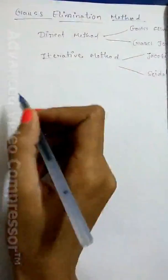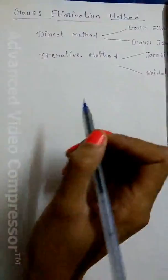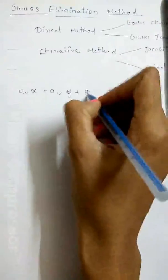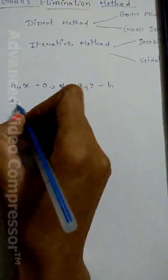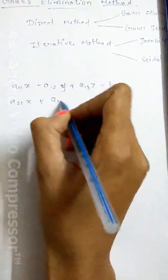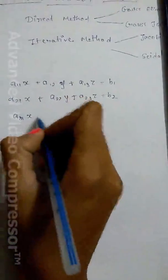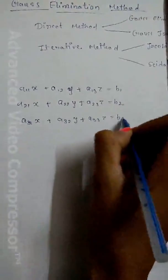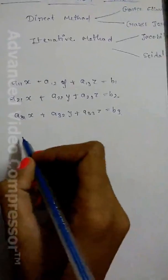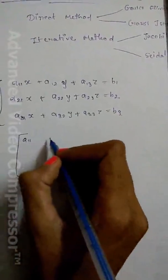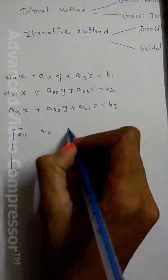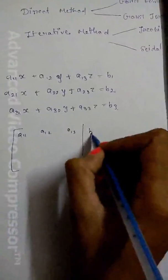In this method we are given a system of linear equations: a11x + a12y + a13z = b1, a21x + a22y + a23z = b2, and a31x + a32y + a33z = b3. From these equations we convert them into an augmented matrix, writing the coefficients of x, y, and z in matrix form.